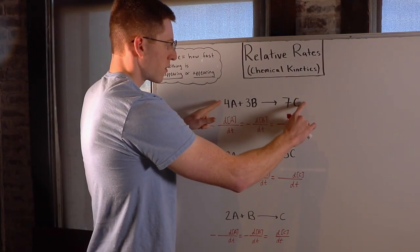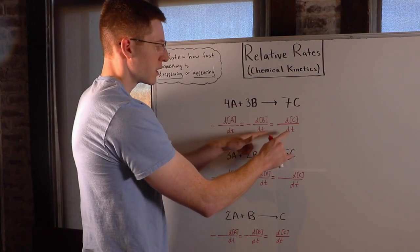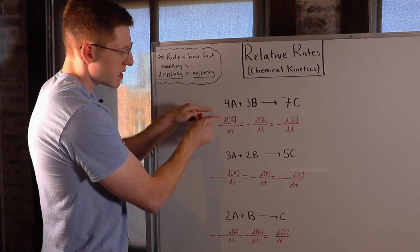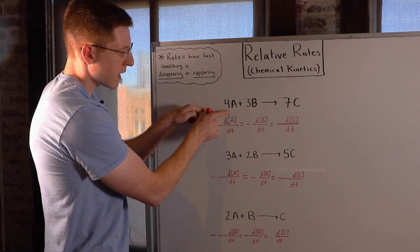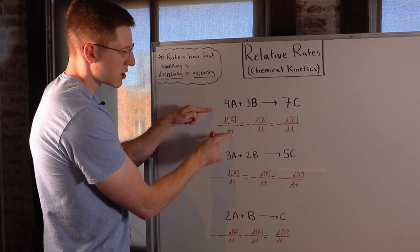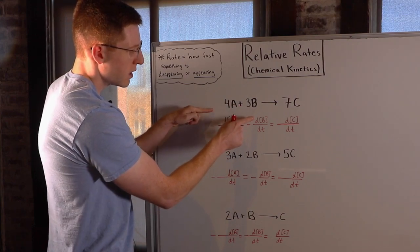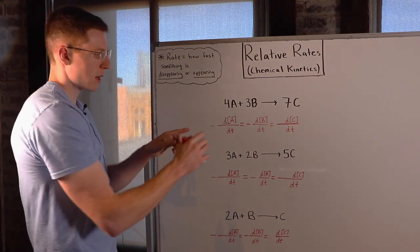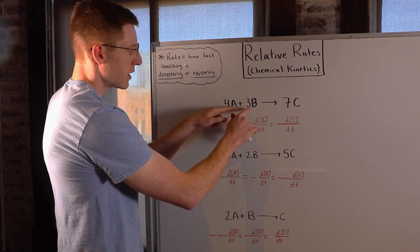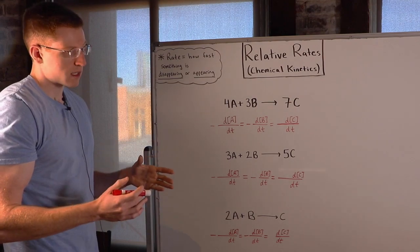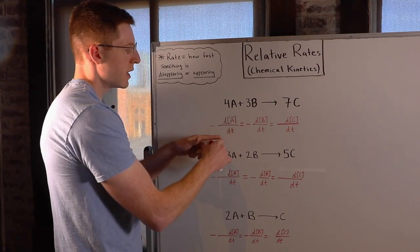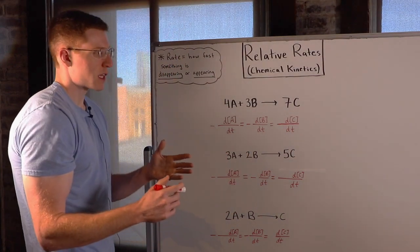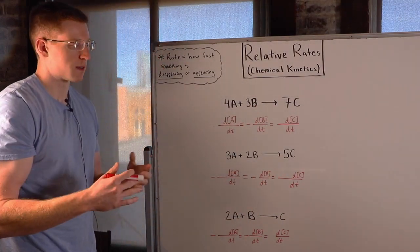If you want to write the relative rates for a reaction like this, you put one term down for each chemical — one for A, one for B, and one for C. It's dA/dt (change in concentration of A over change in time), dB/dt, and dC/dt. Notice that I put a negative sign in front of the A term and the B term because they're reactants — their concentration is decreasing; they're disappearing. The C term, dC/dt, is positive because it's appearing.